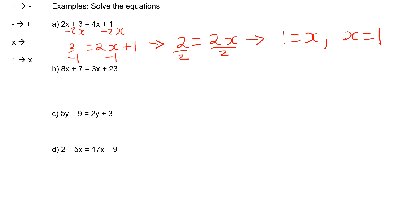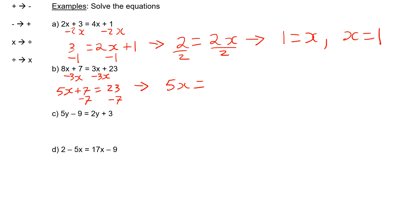In question B, there are more x's on the left-hand side, so I'm going to subtract 3x from both sides. This gives me 5x plus 7 is equal to 23. I'm then going to subtract 7 from both sides, leaving me with 5x equal to 16. And I then divide both sides by 5, which gives a final answer of x equals 3.